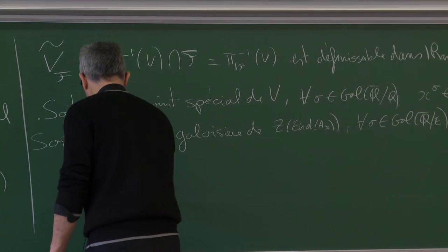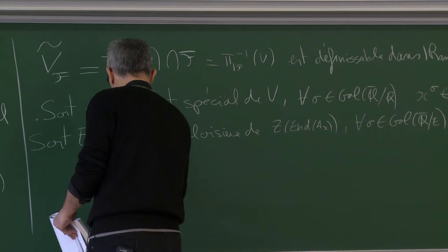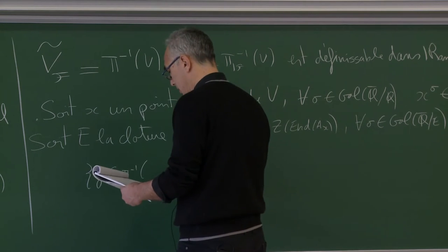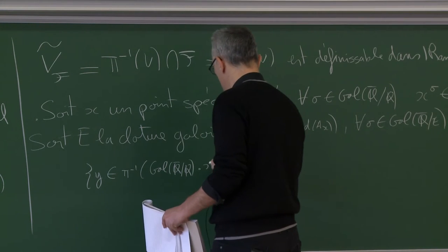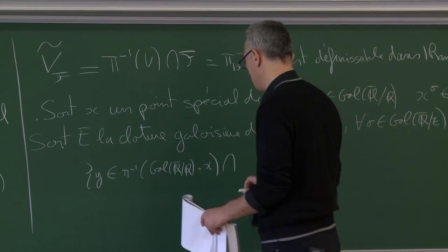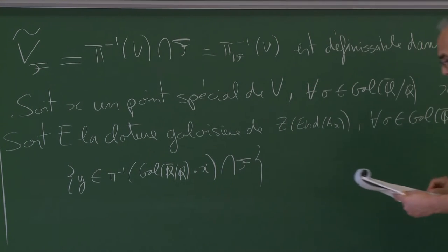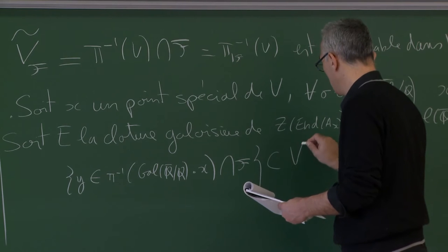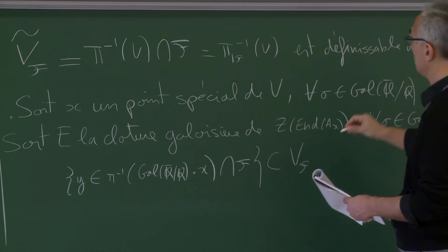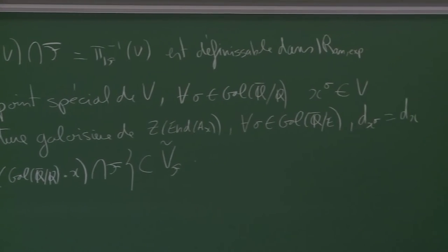Ce que je vais prendre, c'est l'ensemble des y qui sont dans π⁻¹ de cette orbite sous-galois, et je me restreins à F. Ça, c'est quelque chose qui est à l'intérieur de cet ensemble définissable Ṽ_F. Je sais pas mal de choses là-dessus. Mon but est d'appliquer le théorème de Pila-Wilkie.